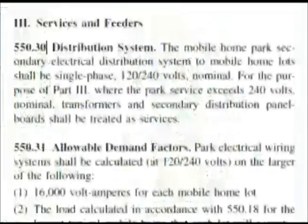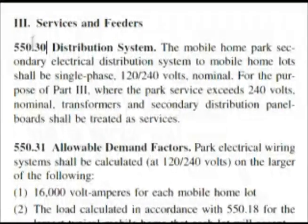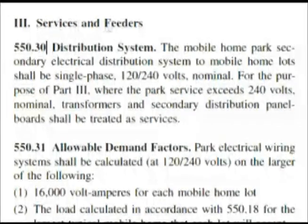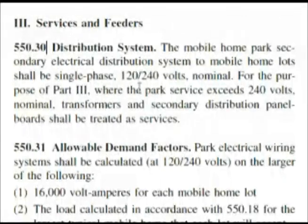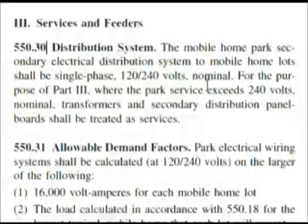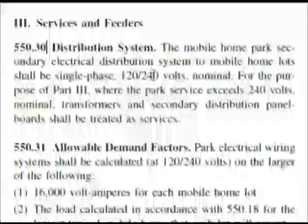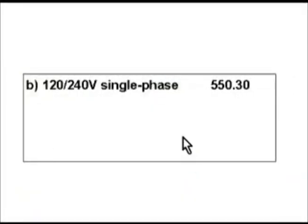So let's go there and look. Here we are at 550.30, and again it's under Services and Feeders for mobile home parks, and it talks about our distribution system. As we read this, it's almost word for word from what we want — it's talking about single phase 120/240 volts nominal, and that was choice B in our answers.